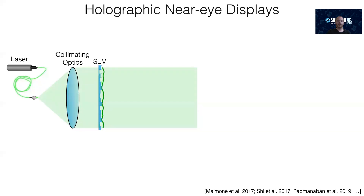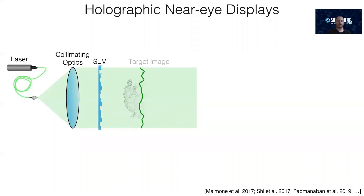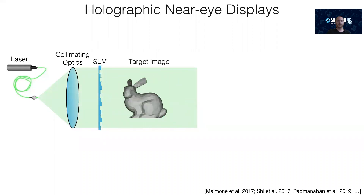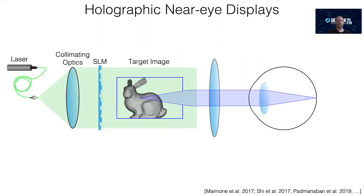Here, the phase of the field is delayed by the SLM pixels. Interference creates the image that is seen by the user through an eyepiece.